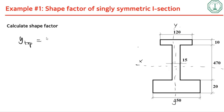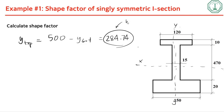y_top is the total section height minus y_bottom, giving 284.74 mm. Since y_top is larger, this is y_max, and you need y_max to calculate the elastic section modulus.